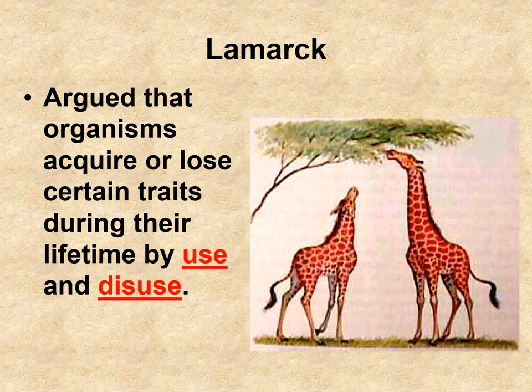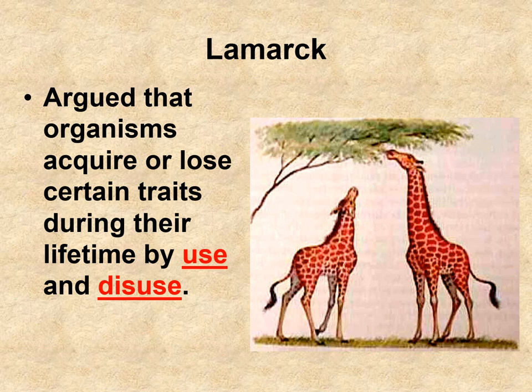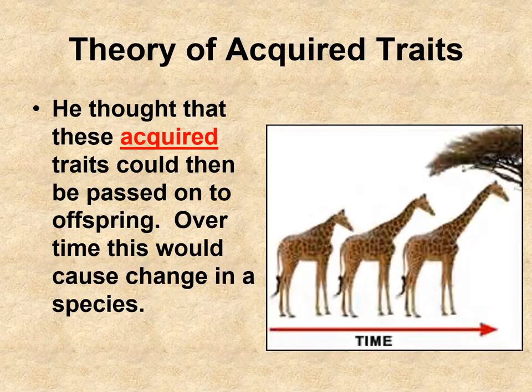The giraffe is the classic example given for Lamarck's theory. A group of horse-like creatures lived in an area with a drought and not much grass, but there were trees way up high that were bushy. According to Lamarck, if these creatures tried hard enough, they could actually stretch their necks — longer and longer until they could reach the leaves — and keep their necks like that, having acquired those characteristics. He thought these acquired traits could be passed on to offspring and change the species over time. We know that doesn't happen, but it was a widely accepted viewpoint back in the day.